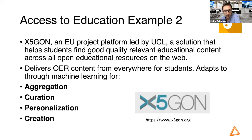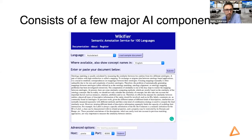Another example of access to education is the X5GON project, an EU project led by UCL. It provides open educational resources tailored to the needs of individual students, and adapts content through machine learning for aggregation, creation, and personalization. There is not enough time to go through every AI component of the platform, but I strongly suggest you have a look — you can play around with it, and it is freely available.